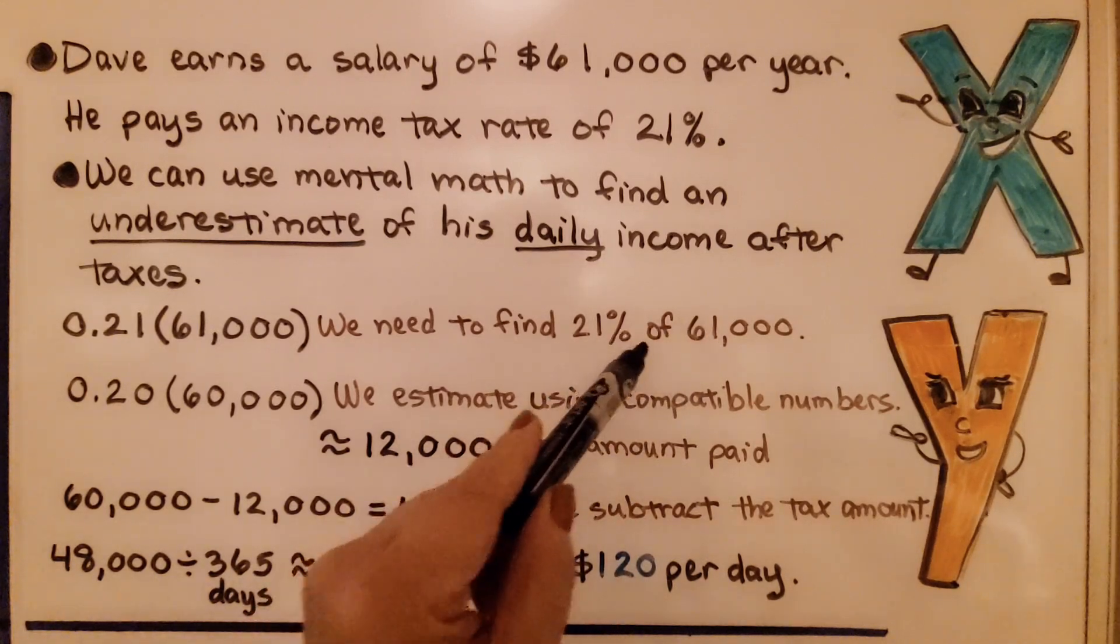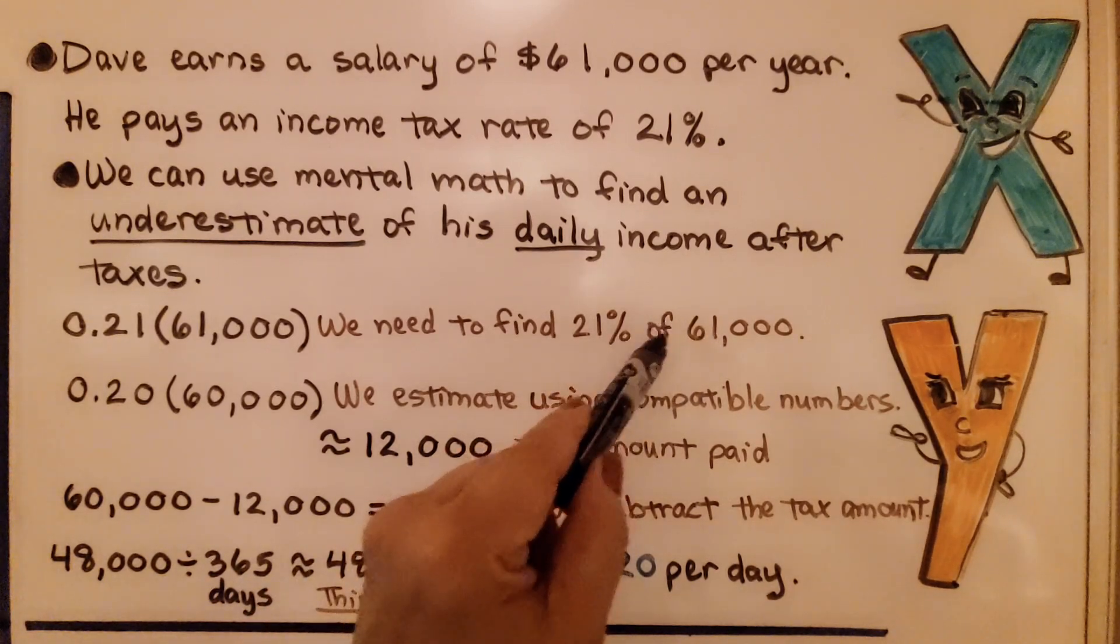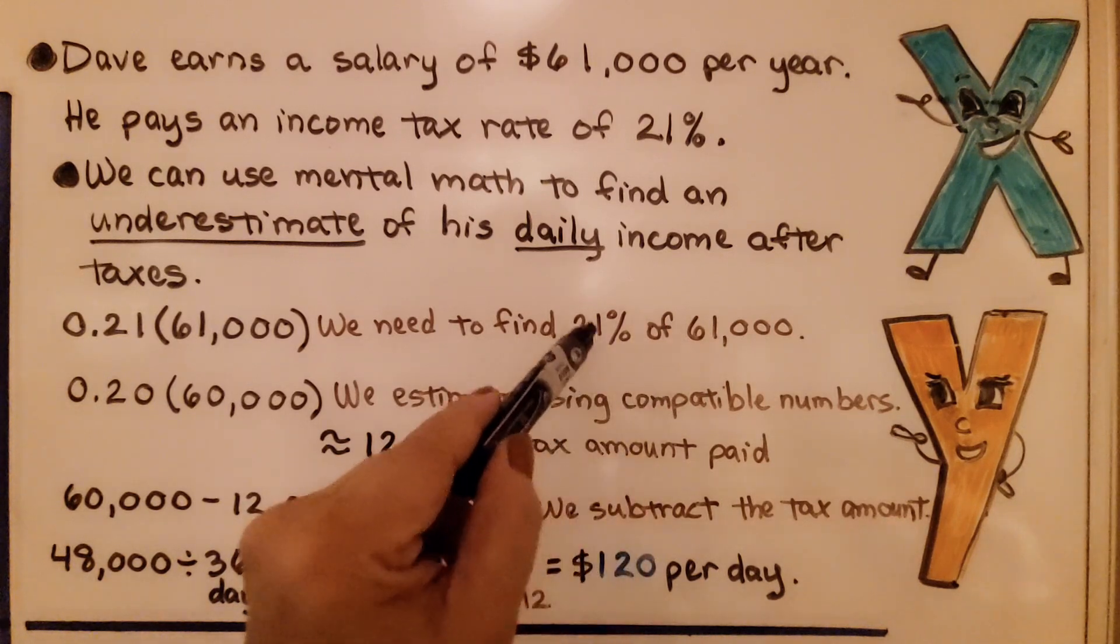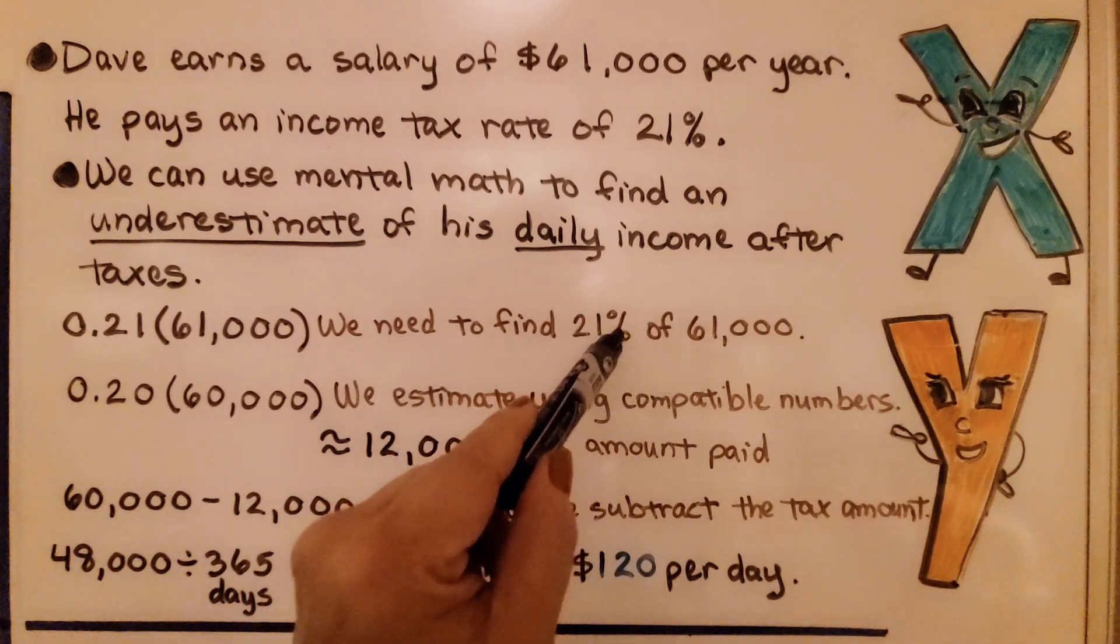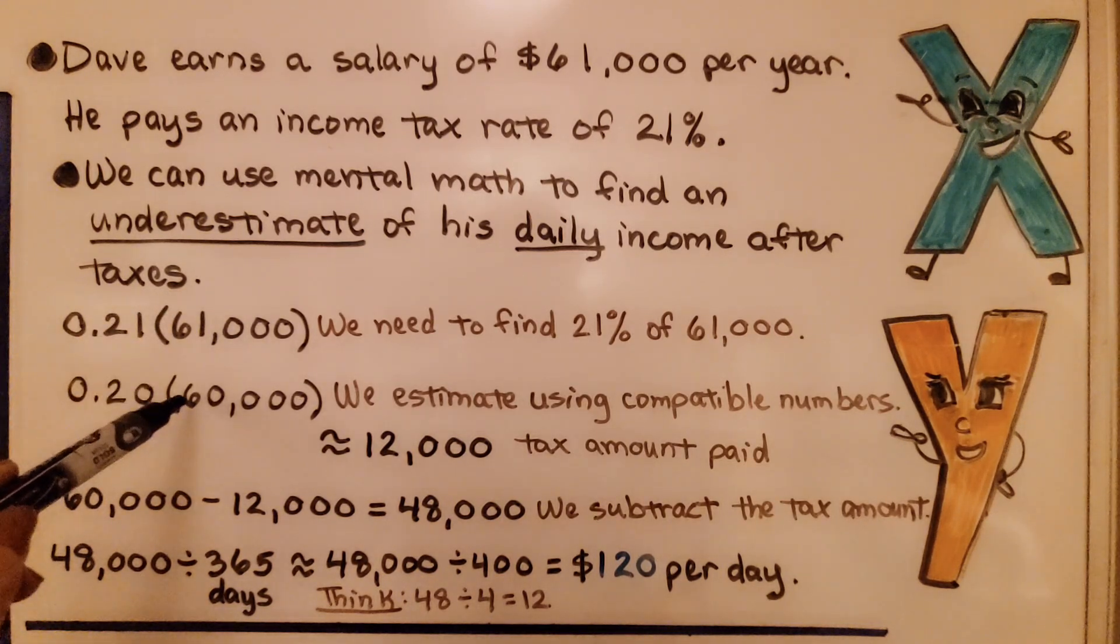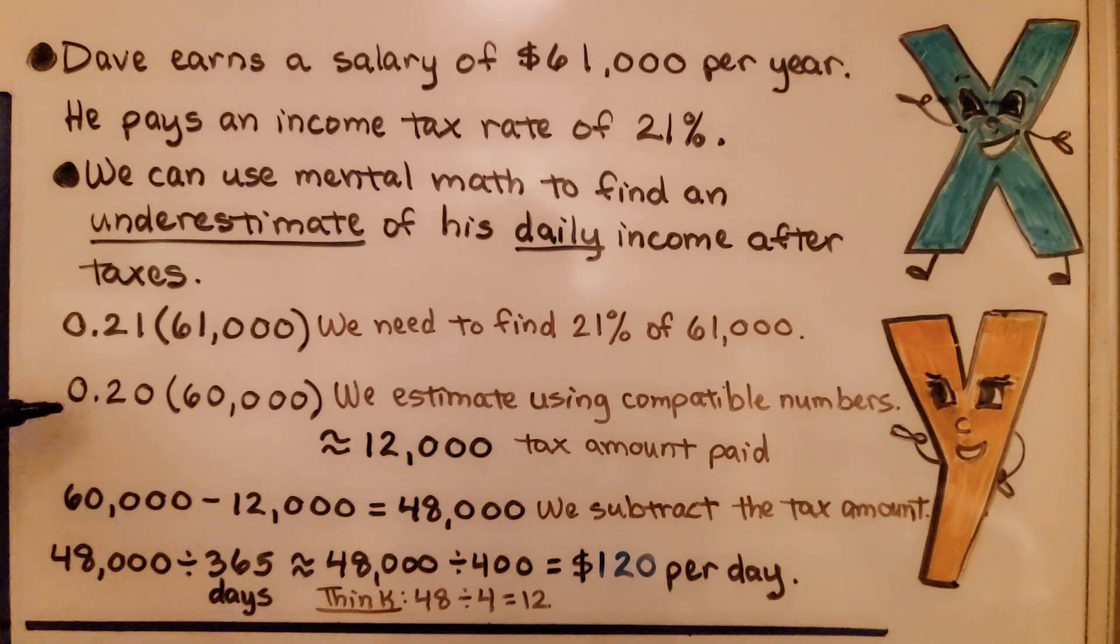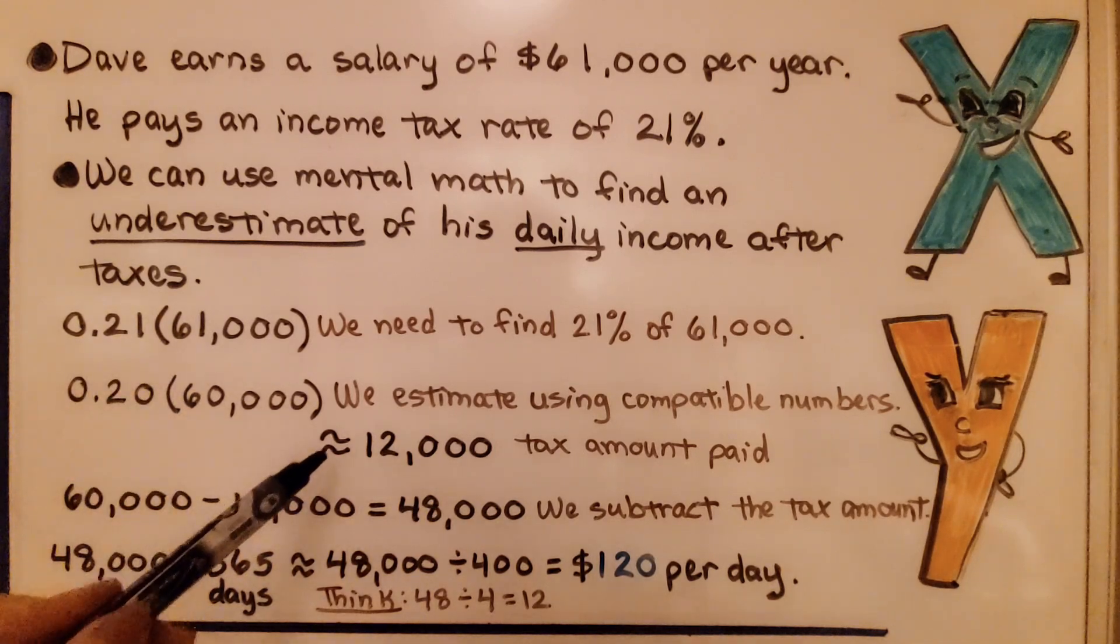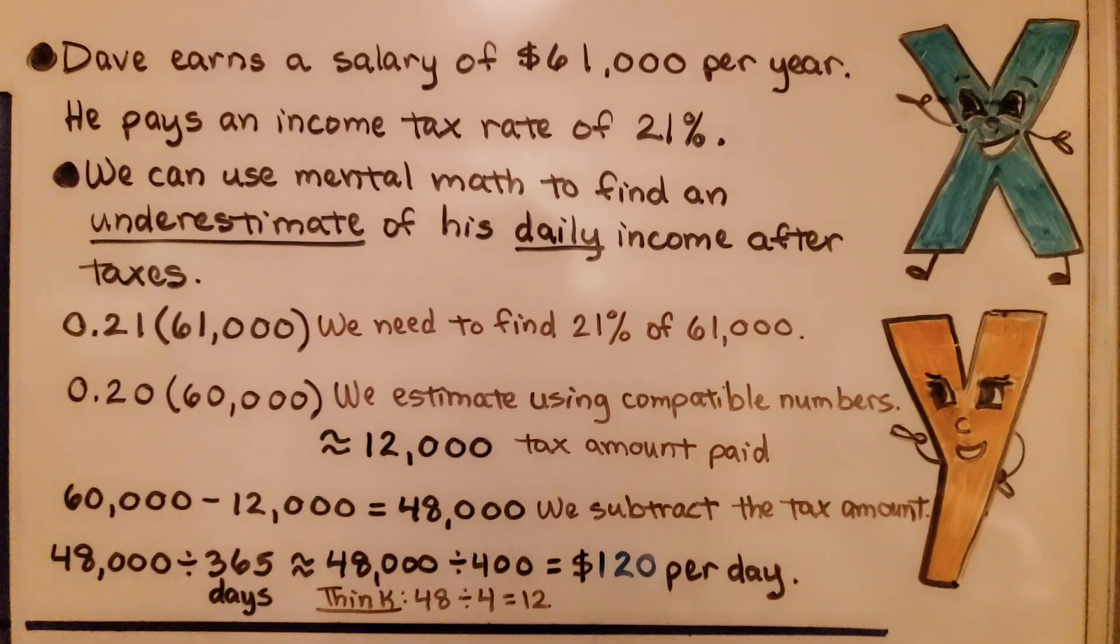If you've been following me for a few years, you know that we can think of the word of as a multiplication symbol. So, we're doing 21% times $61,000. So, we can use compatible numbers to estimate. Instead of 21, we'll use a 20 here. Instead of 61, we'll use 60. That gives us 0.20 times $60,000. We do the multiplication and we get approximately $12,000, which would be the tax amount he paid.